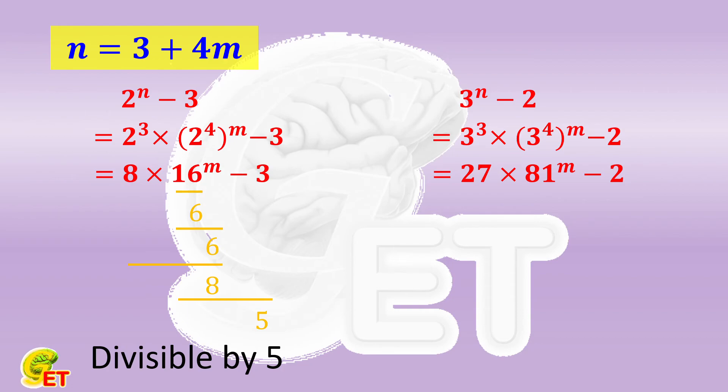The digit of 81 at 1's place is 1. So no matter how many times 81 is multiplied by itself, the digit is still 1. Once multiplied by 27, the digit becomes 7. Subtracted by 2, the digit becomes 5 as well. So in this situation, 3 to the nth power minus 2 must also be divisible by 5.